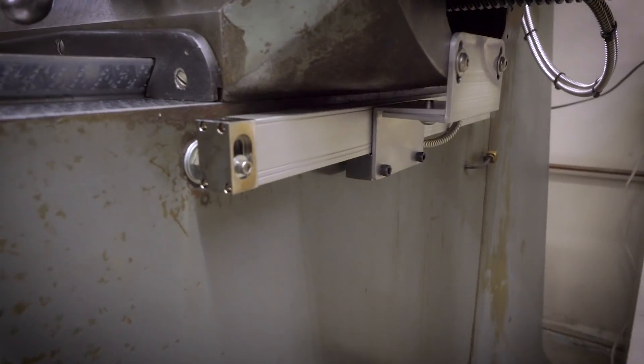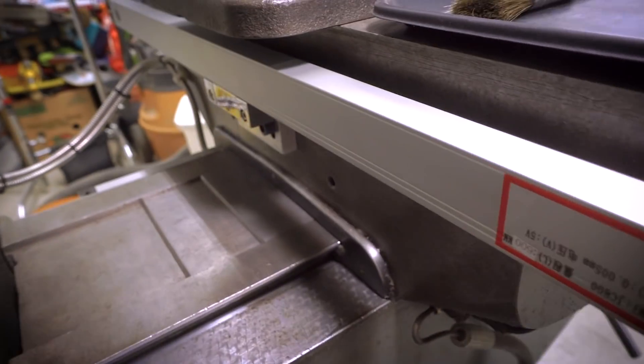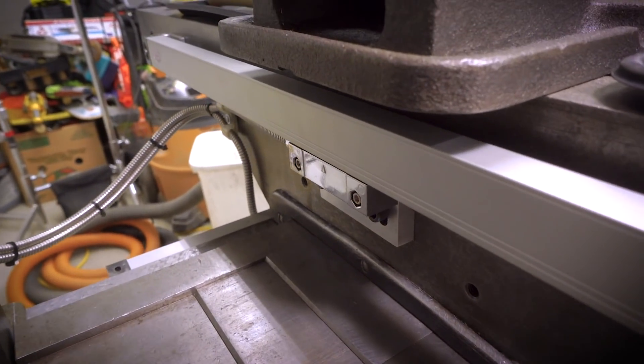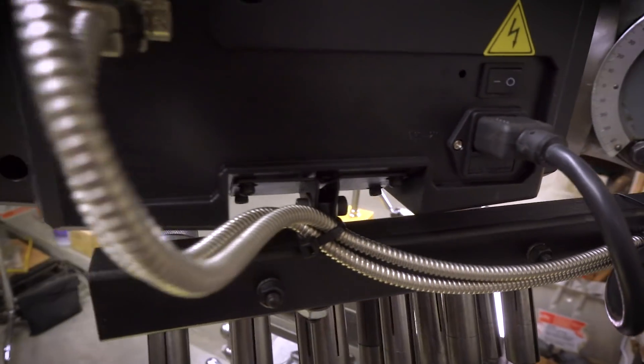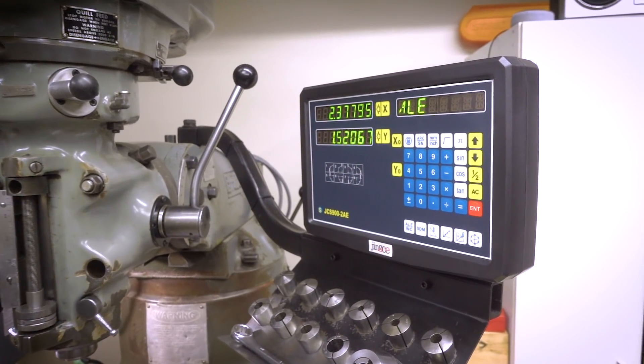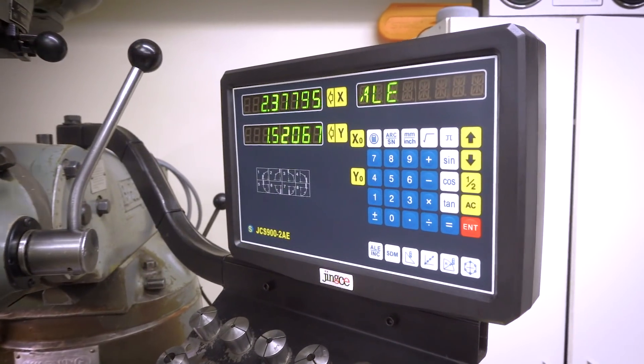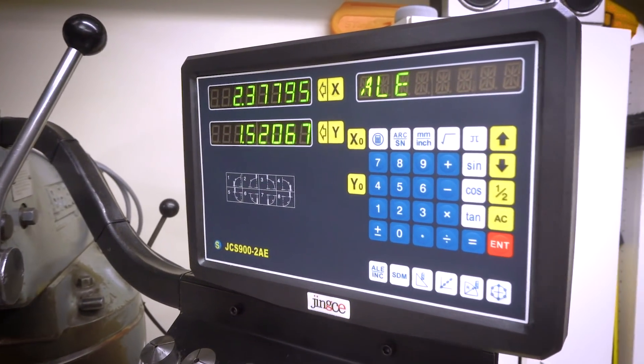They're connected to those little sensor blocks and those sensor blocks slide back and forth on those aluminum rails and inside the aluminum rails are some glass scales, which give me readings that go to the digital readout. So, I owe a big shout out to Banggood. They provided me with this digital readout along with the cables and the scales to go on the Bridgeport.